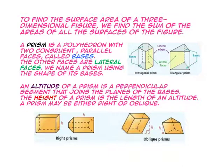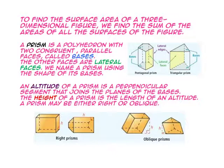An altitude of a prism is a perpendicular segment that joins the planes of the bases. The height of a prism is the length of an altitude. The prism may be either right or oblique. Here we have right prisms, and here we have oblique prisms.